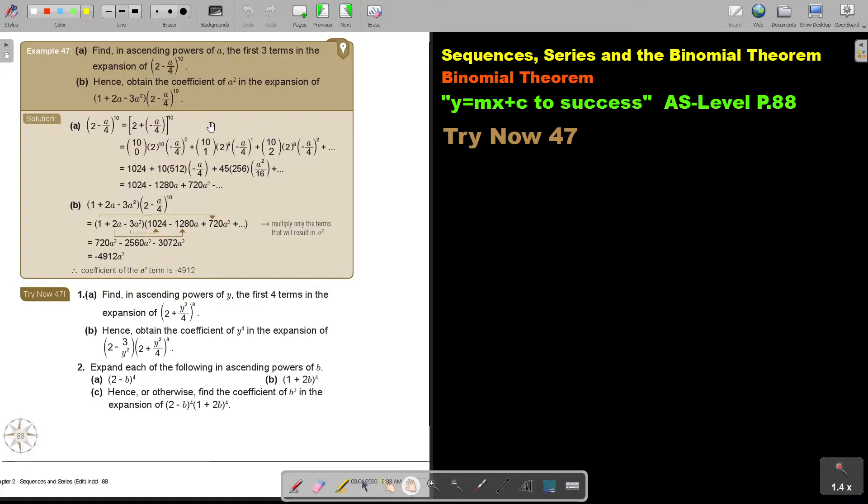Now just remember your formula. So the first term is 10 choose 0, the second 10 choose 1, 10 choose 2. This is first, second and third, only three terms.